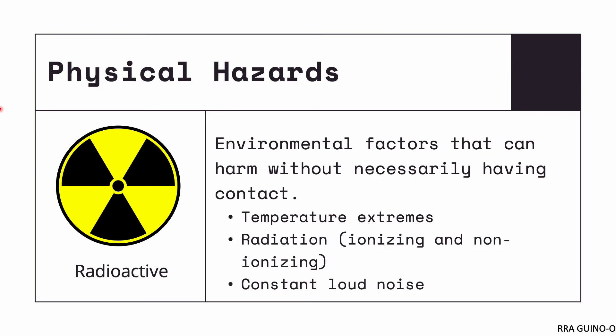Next, let's talk about physical hazards. In contrast to chemical or biological hazards, physical hazards are environmental factors that can cause harm without necessarily having contact with an individual. Some examples are temperature extremes — either extremely hot or extremely low temperatures — radiation, including ionizing radiation such as x-rays and non-ionizing radiation such as microwaves, and constant loud noise, which can lead to detrimental effects on your hearing.